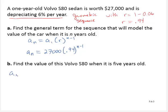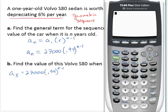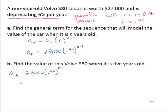So then a sub 5 would be 27,000 times 0.94 to the 5 minus 1st power. Let's calculate that, 27,000 times 0.94 raised to the 5 minus 1st. Now be careful, if you're going to type it all in one line, you need to put parentheses around that exponent. If you just simplify it in your head, you just type in the 4. So 21,080, about 21,080.